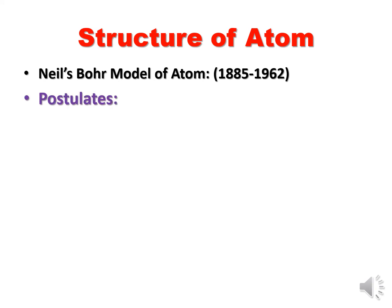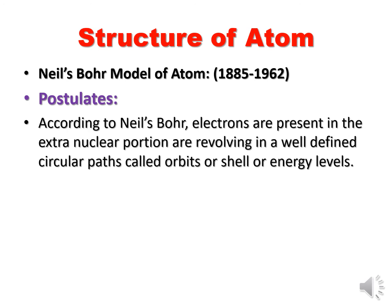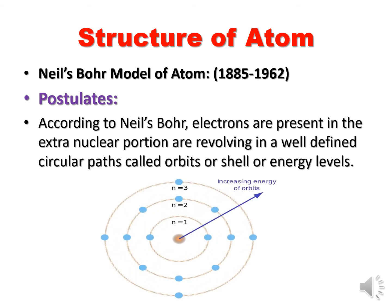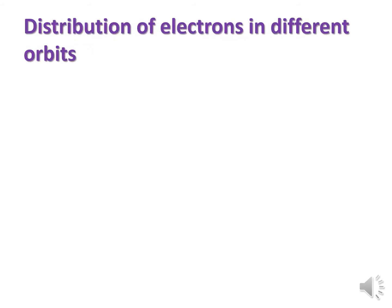So what were his postulates? According to Niels Bohr, electrons present in the extra nuclear portion are revolving in well-defined circular paths, which are called orbits or shells or energy levels. In the extra nuclear portion of an atom, the electrons revolve in circular paths. So let us learn the distribution of electrons in different orbits.